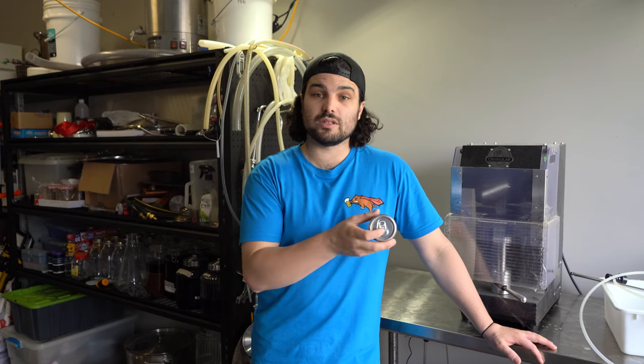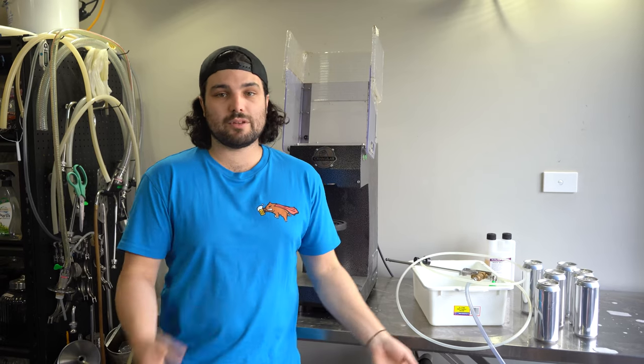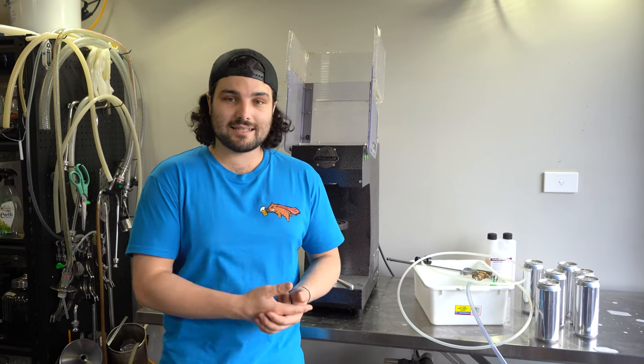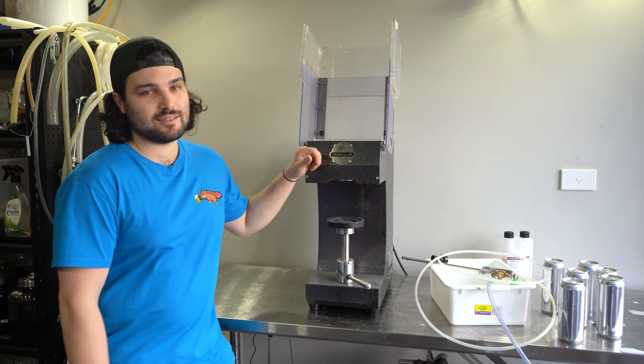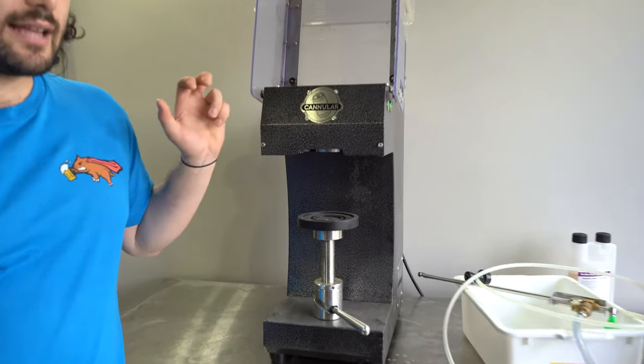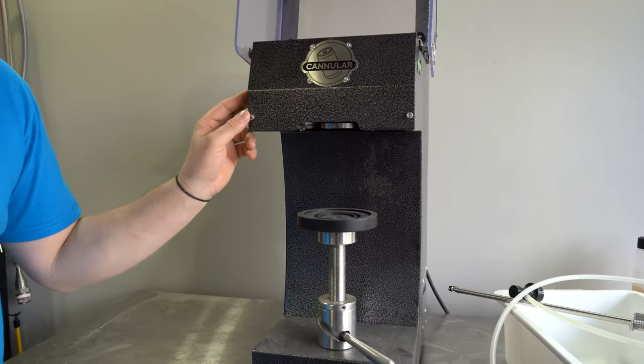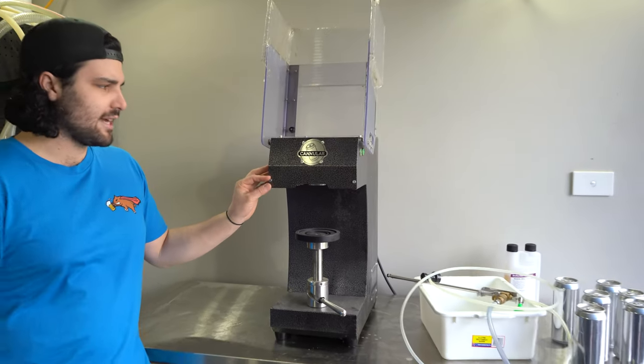Let's get into it talking about the setup that you're going to need and the kind of equipment you're going to need to actually put the stuff into the cans. First thing is pretty obvious, you need a canning machine. So we use the Cannular. There are a couple different types of machines on the market for the homebrew scale.